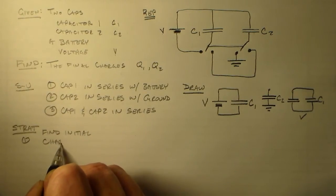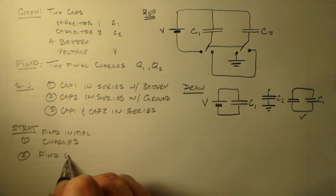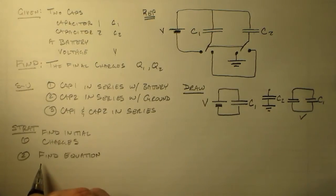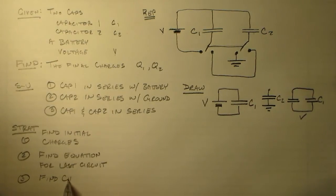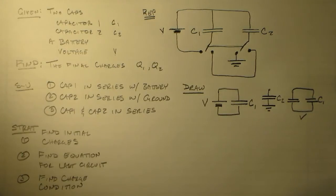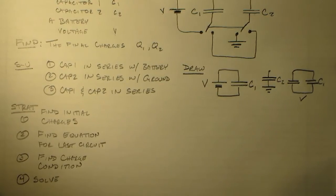So our strategy is first to find the initial charges on the capacitors. We just need to figure out what those are. Then find an equation for the last circuit. And we'll use a Kirchhoff's Law to do that. And then we'll need to find the charge condition. So charge is going to be conserved, so we'll get a condition out of that. And finally, in four, we'll just solve everything and be completely happy. Because that's what physics problems are intended to do, is make you happy. That's what physics problems are for.